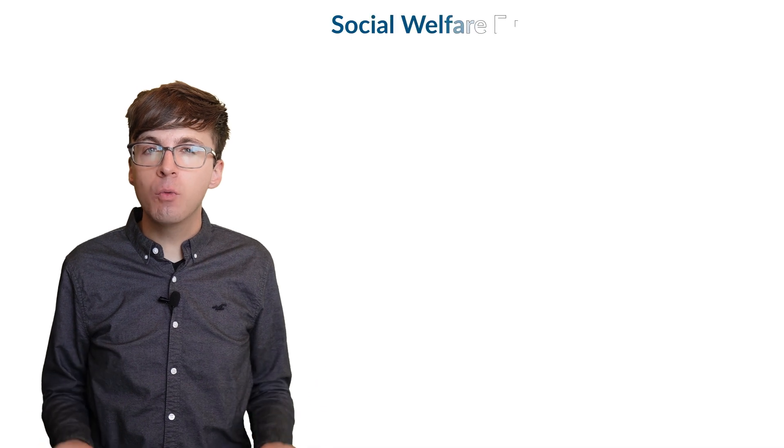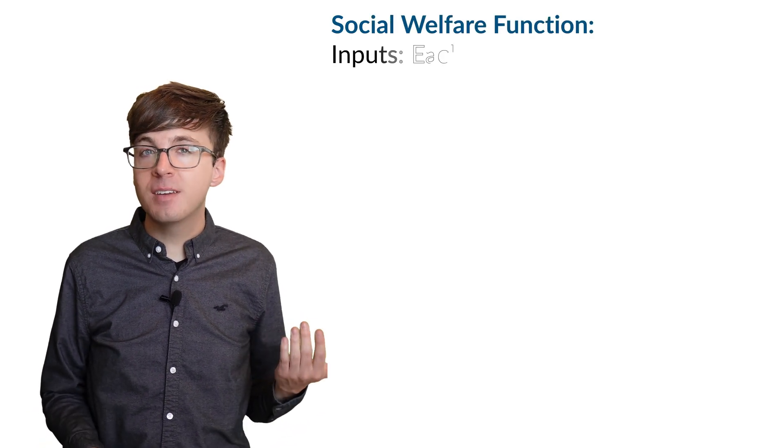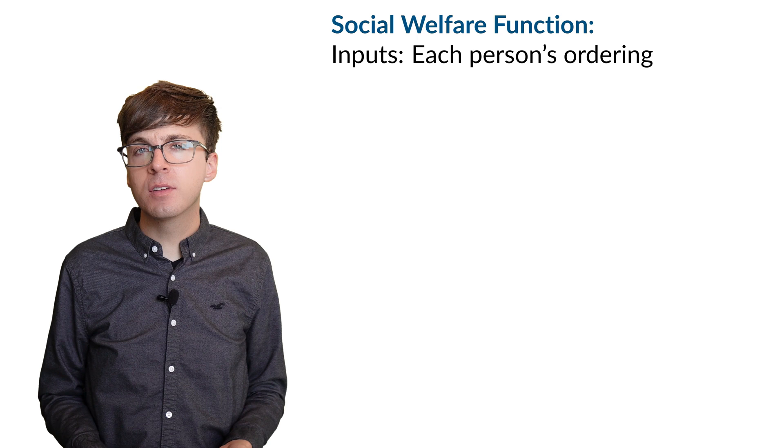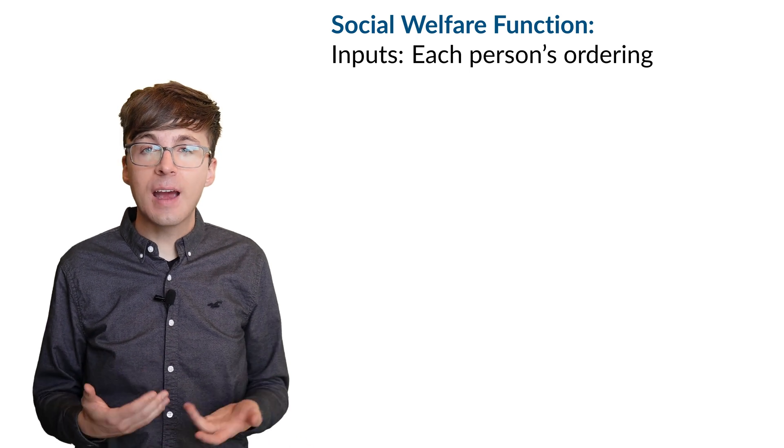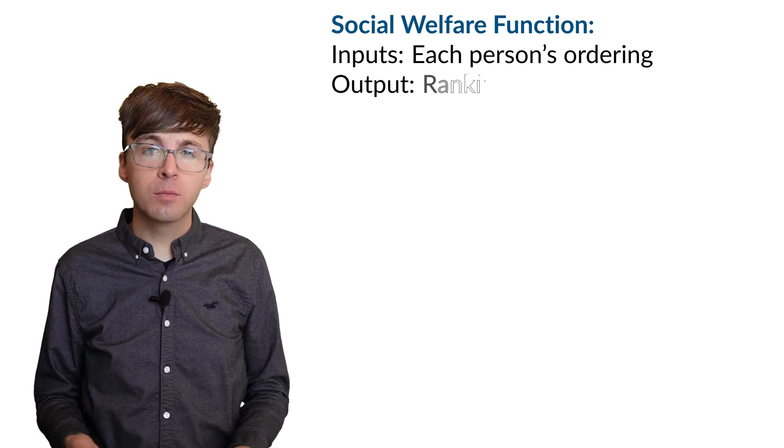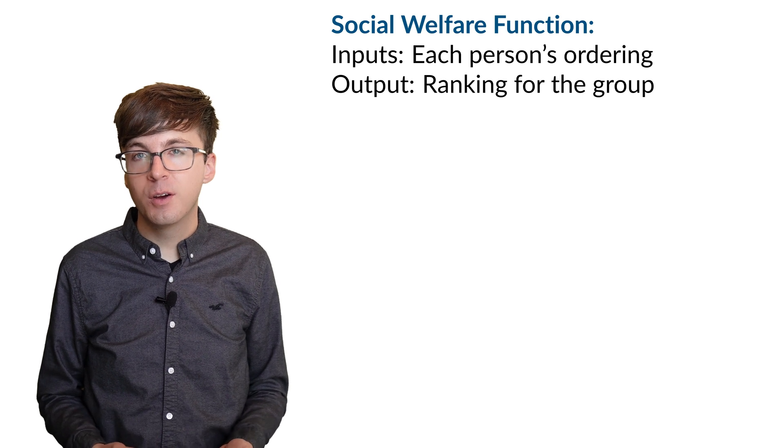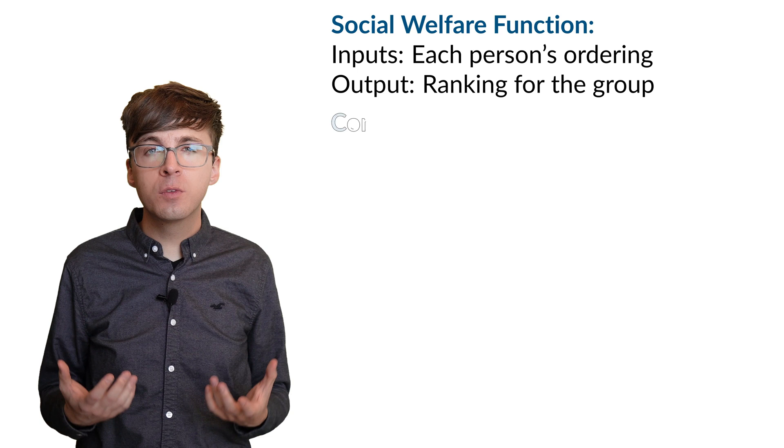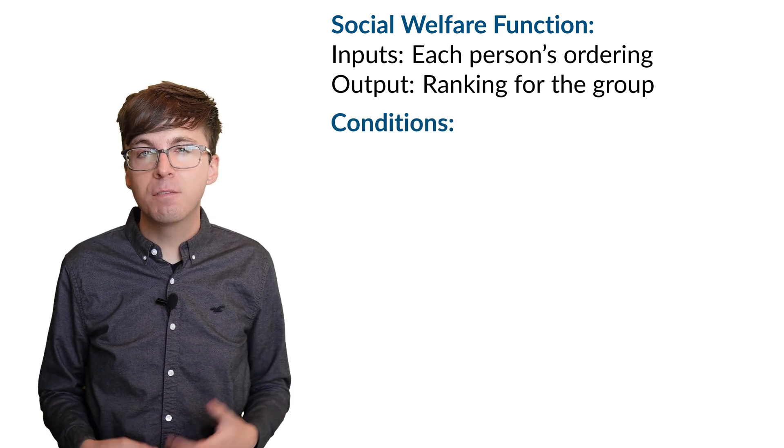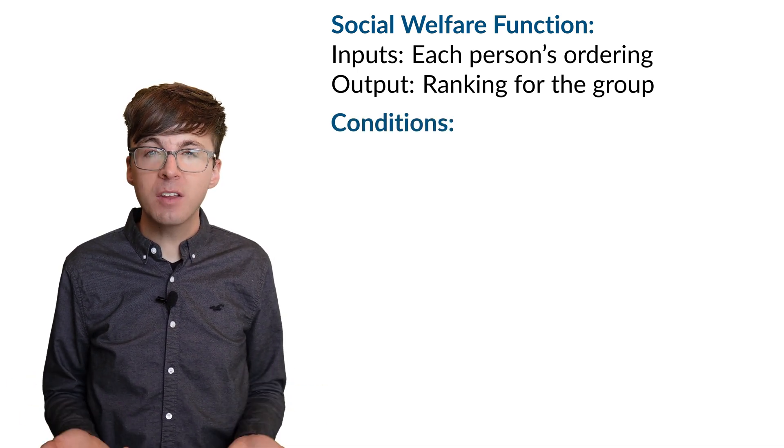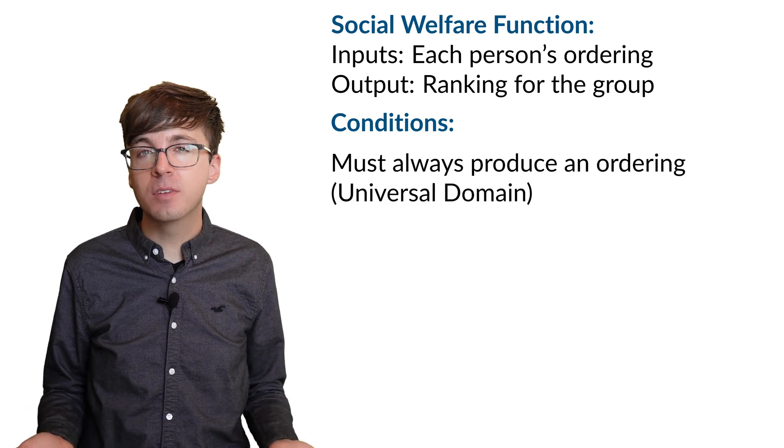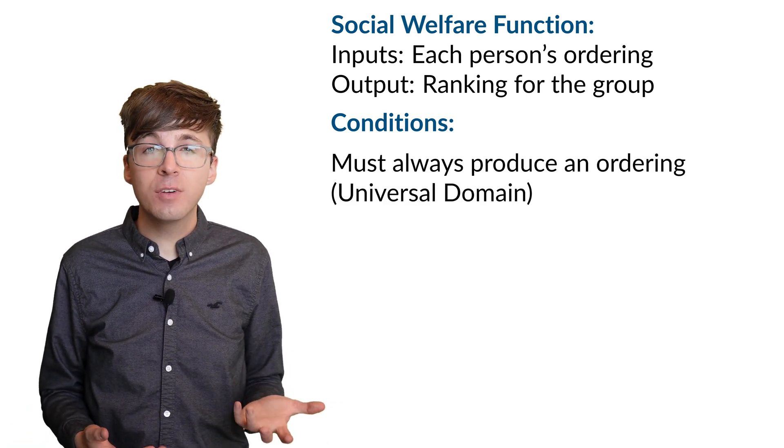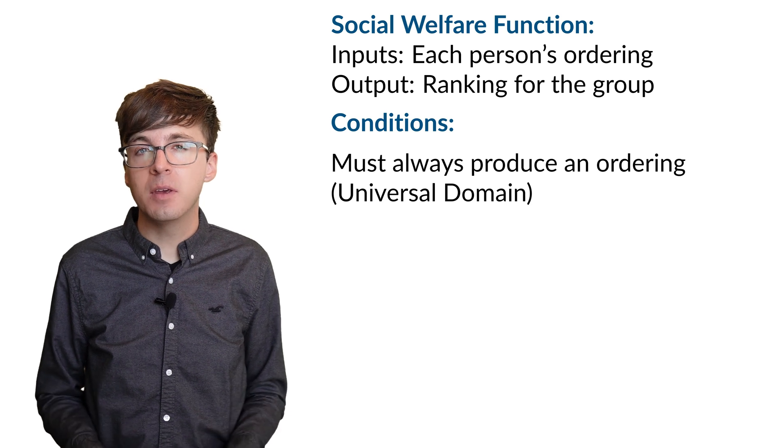Our goal is to find a social welfare function, a function that takes each person's ordered preferences as the inputs, and outputs a complete transitive preference order for the group. We want our voting system to be fair and rational, so we'll impose four key conditions. The first requirement is that our function must work for any possible set of individual rankings, no matter how contradictory or unusual they may be.